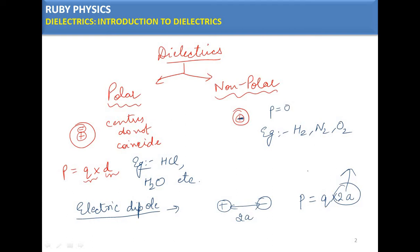We generally use 2a as the separation for simplicity, because when we calculate the dipole moment for different conditions — on the axial, equatorial positions — having a factor of 2 makes the derivation easier. It has no separate physical meaning; it is simply the distance between the charges.